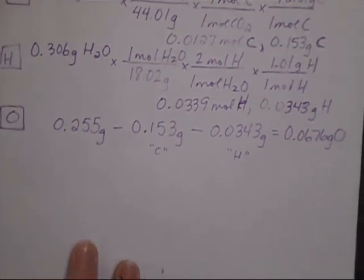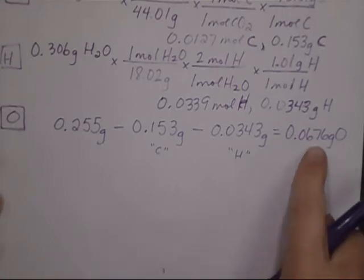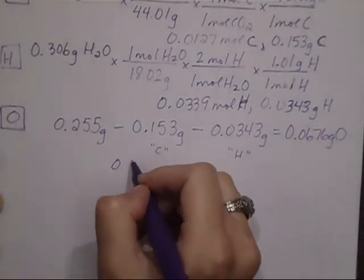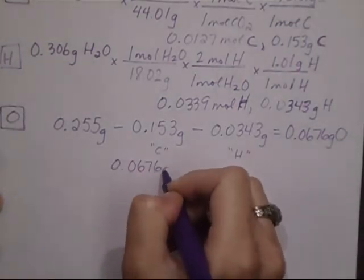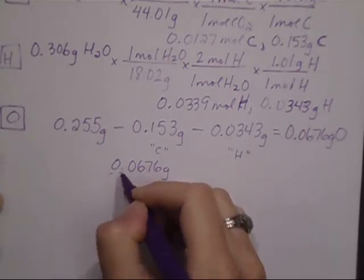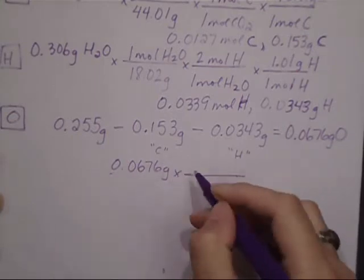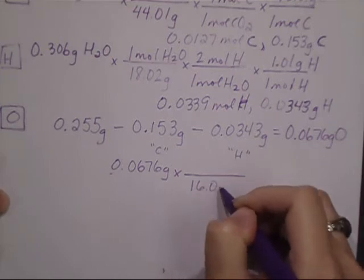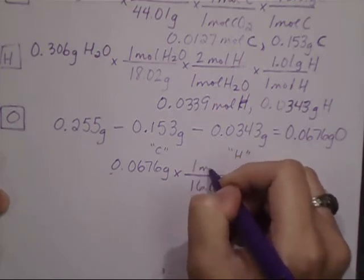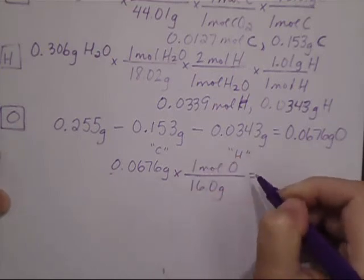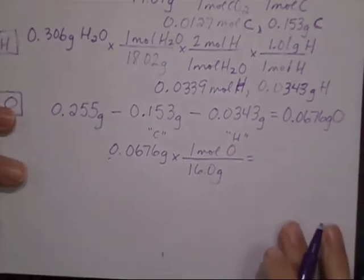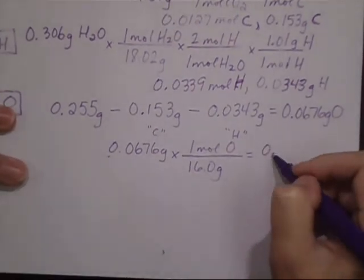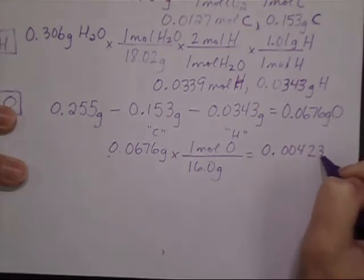So again, with my empirical formulas, I need moles. So I'm going to take that mass of oxygen and I'm going to divide it by its molar mass or use dimensional analysis to get to moles of oxygen. And that gives me 0.00423 moles of oxygen.